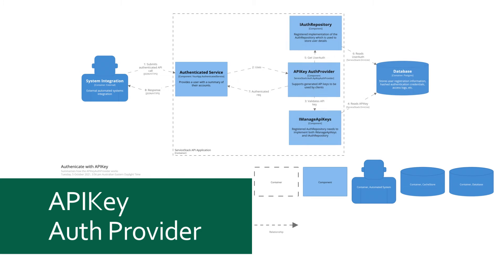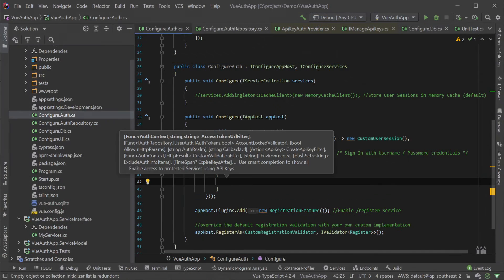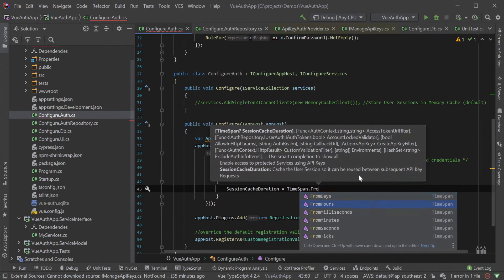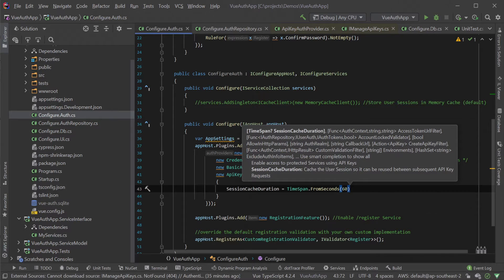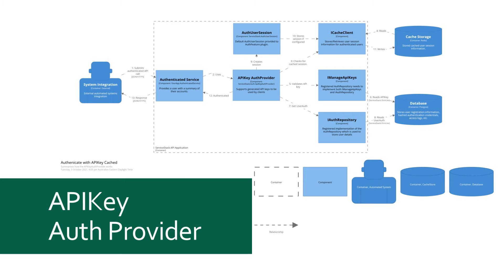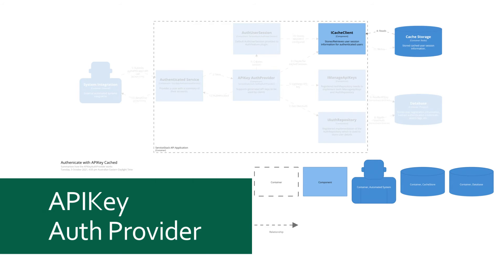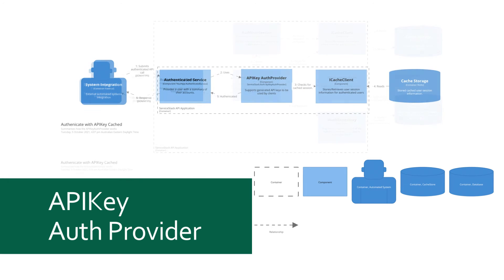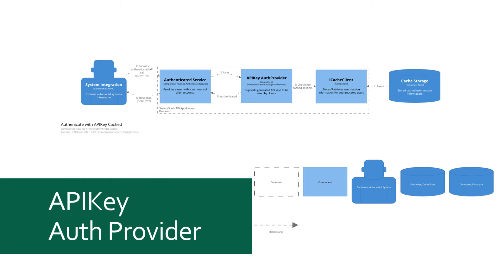As we can see on this diagram, at least two reads from the database are performed per request by default: one to look up the API key itself and another to fetch the details of the user. This setup will be fine for a lot of use cases, but if you find yourself with high-request-rate APIs, a short session cache duration could drop the number of database queries considerably. The session cache duration is a time span that can be populated as configuration on the auth provider itself to enable this cache session behaviour. Here we can see the process for a cache miss, where the details are retrieved like normal and persisted back to the cache for the specified duration. A subsequent request within the time period will produce a cache hit and reduce the amount of work your system has to do.